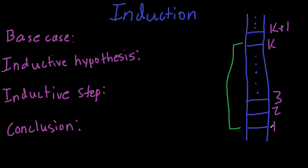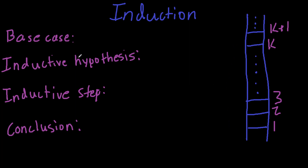If you can prove the base case works, assume p of k works, and then based on your assumption of k you can show that k plus one works, then you've proven that if you can go to one, you can go to two, three, four, five, or k, k+1, k+2, k+3. You're basically proving that if you can start at the beginning and from k go to the next one k plus one, you can go infinitely as far as the domain allows.